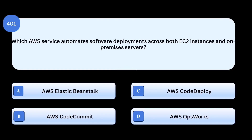Correct answer: AWS CodeDeploy. AWS CodeDeploy is designed to automate software deployments to various compute services like Amazon EC2, AWS Lambda, Amazon ECS, and even on-premises servers. It ensures smooth updates with minimal downtime. Why others are incorrect: AWS Elastic Beanstalk focuses on application orchestration, not hybrid deployments. AWS CodeCommit is a Git-based source control service, not a deployment tool. AWS OpsWorks provides configuration management with Chef/Puppet, not direct deployment automation.